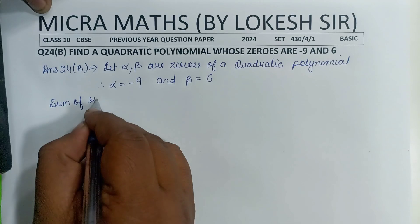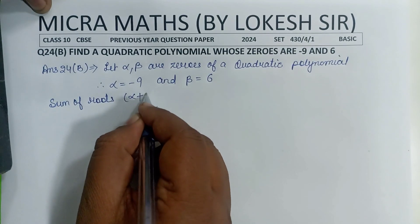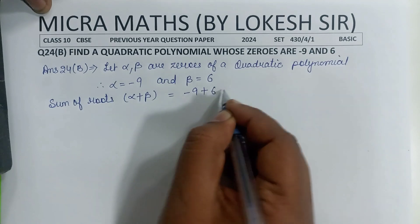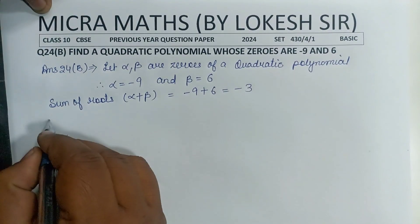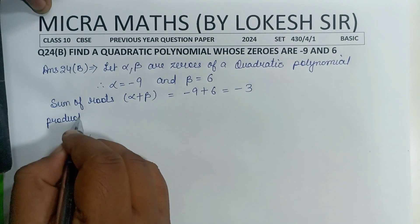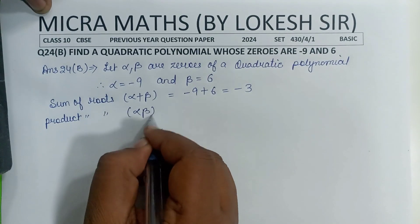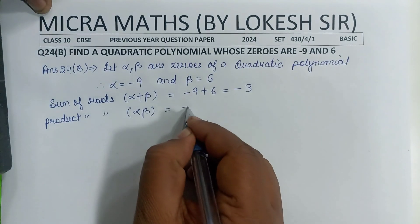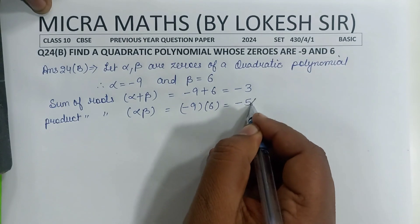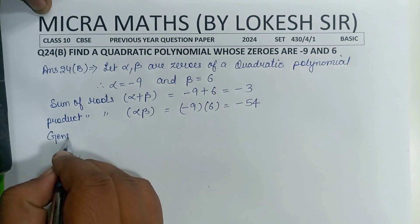Sum of roots: alpha plus beta equals -9 plus 6, which equals -3. Product of roots: alpha times beta equals -9 into 6, which equals -54.